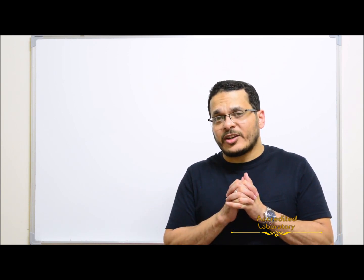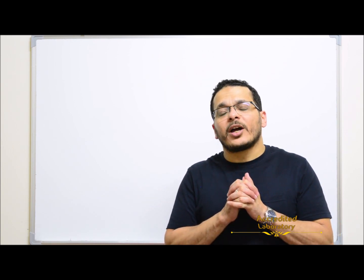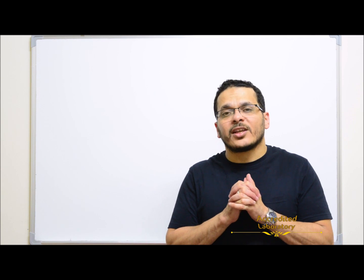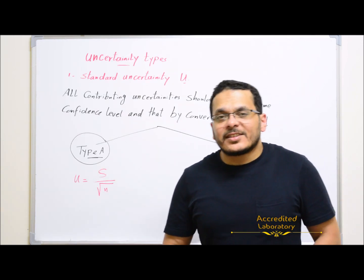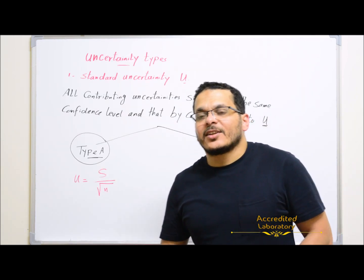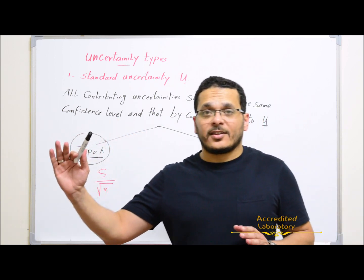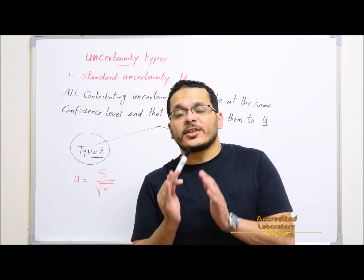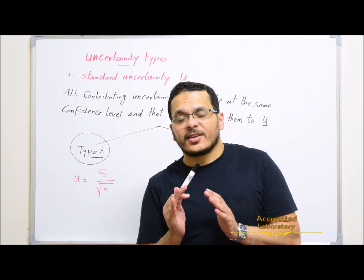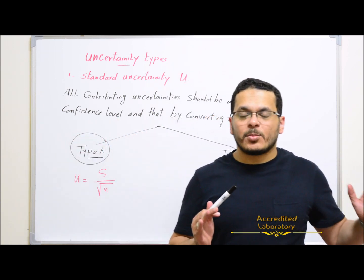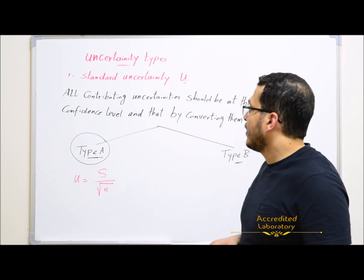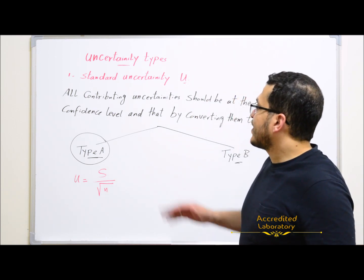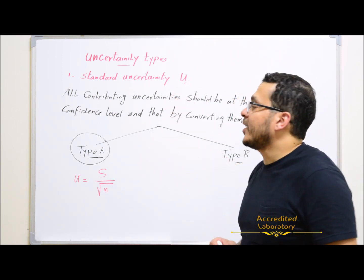Uncertainty from these two types of evaluation will be combined together to get overall uncertainty. There are three uncertainty types: standard uncertainty, combined uncertainty, and expanded uncertainty. Standard uncertainty is the standard deviation of the mean.